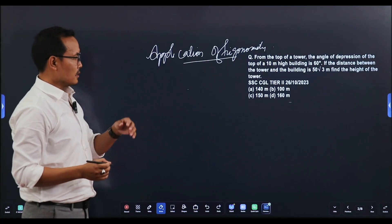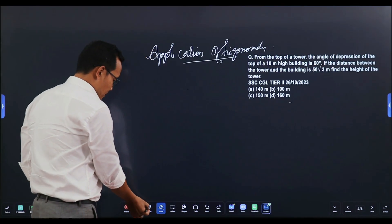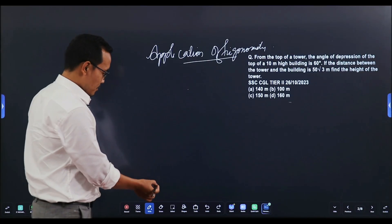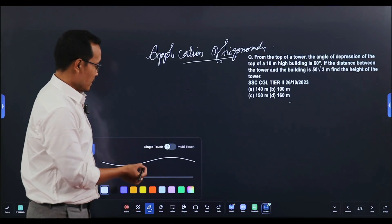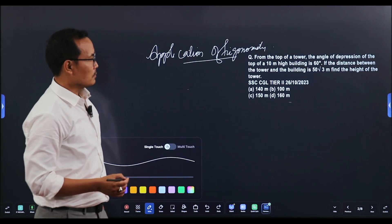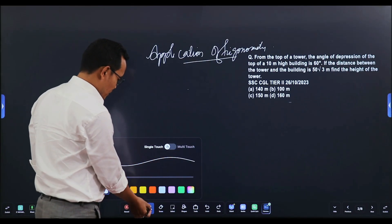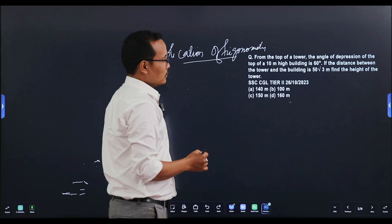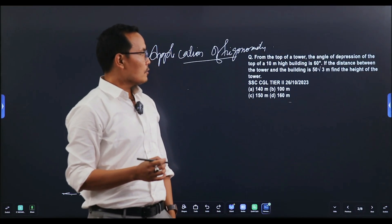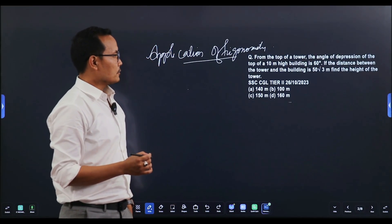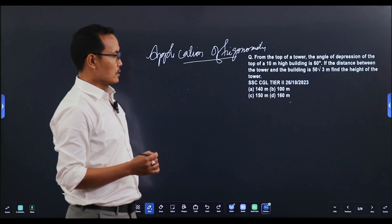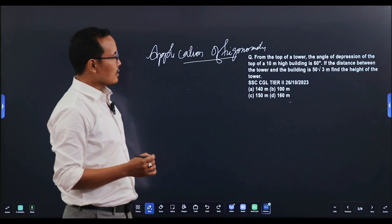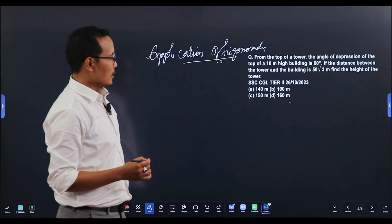From a recent exam — SSC CGL Tier 2, 2023 main exam — height and distance, chapter two: From the top of a tower, the angle of depression of the top of a 10-metre-high building is 60 degrees. If the distance between the tower and the building is 50 root 3, then find the height of the tower.